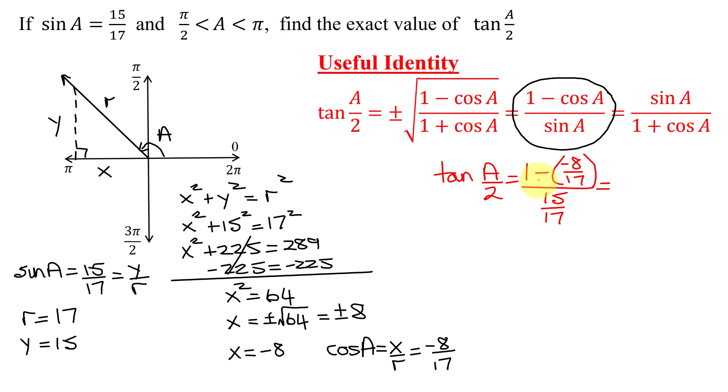So this is going to be 1 minus a negative, so that's plus 8/17 over 15/17. And how do we add fractions? We have to have a common denominator, so I'm going to have 17 as my common denominator. So I'm going to turn 1 into 17/17 plus 8/17, all divided by 15/17.